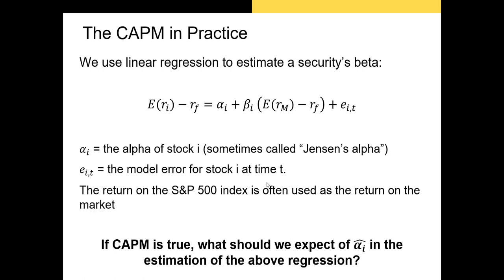So if the CAPM is true and this model is perfect, what should we expect of the alpha in this estimation? Well, if alpha is our measure of outperformance or underperformance, then having the CAPM perfectly predictive of expected stock returns — or in this case, expected excess returns — our alpha should be zero.